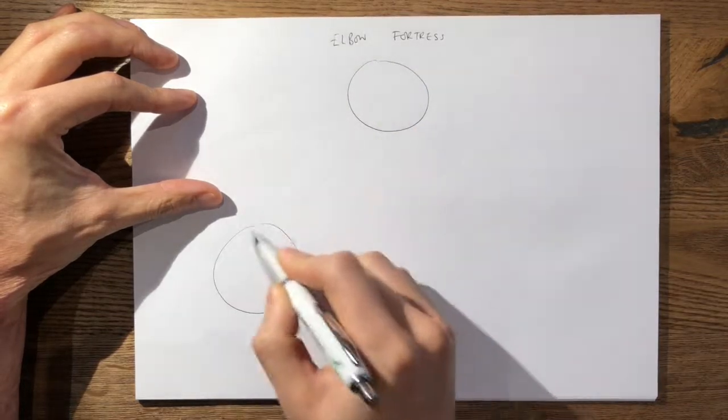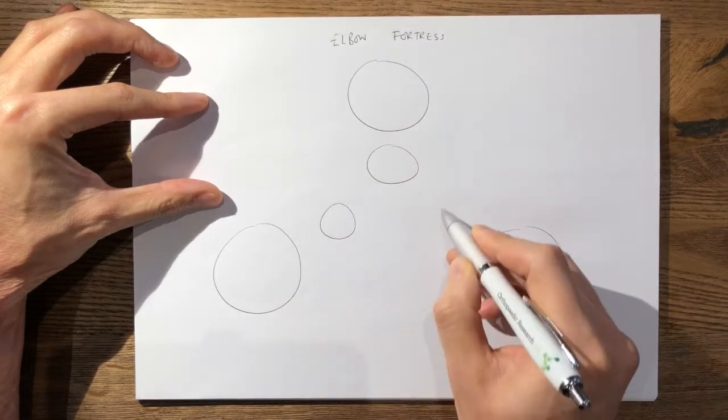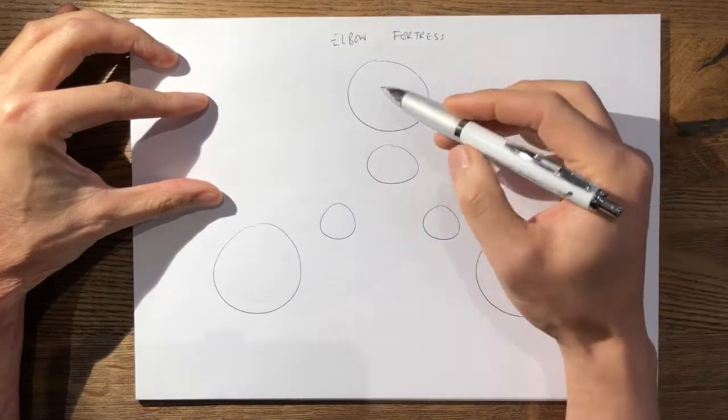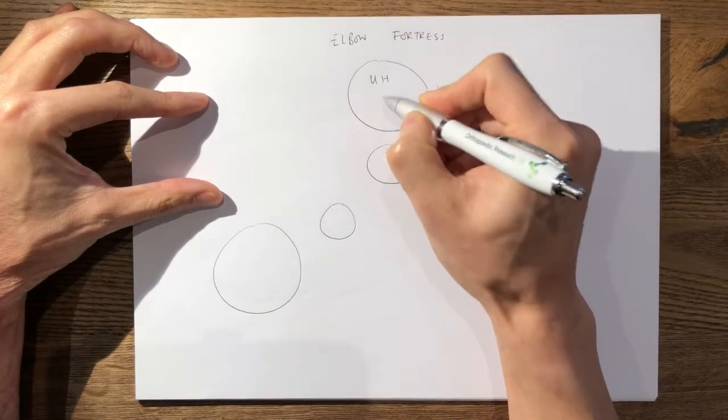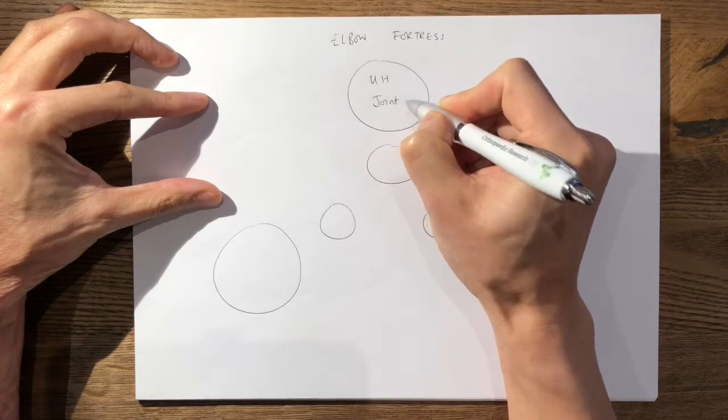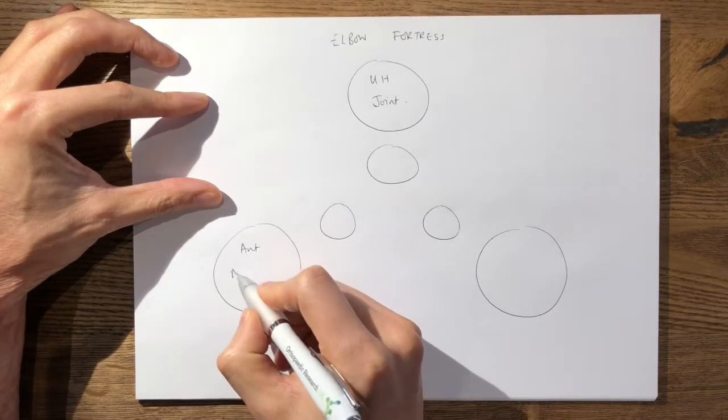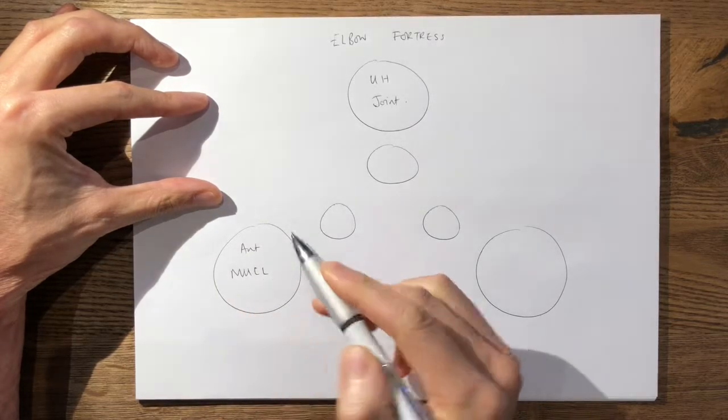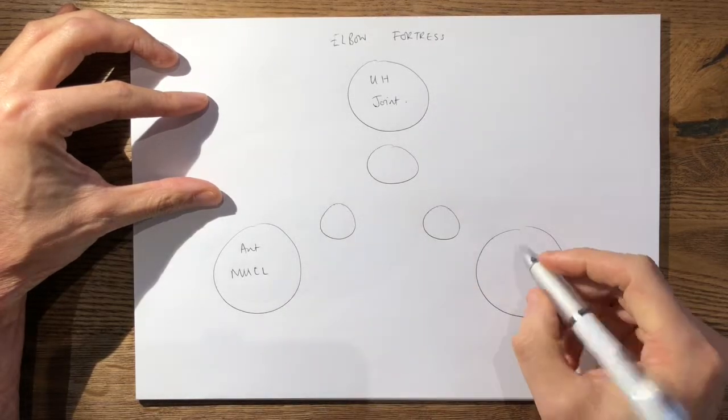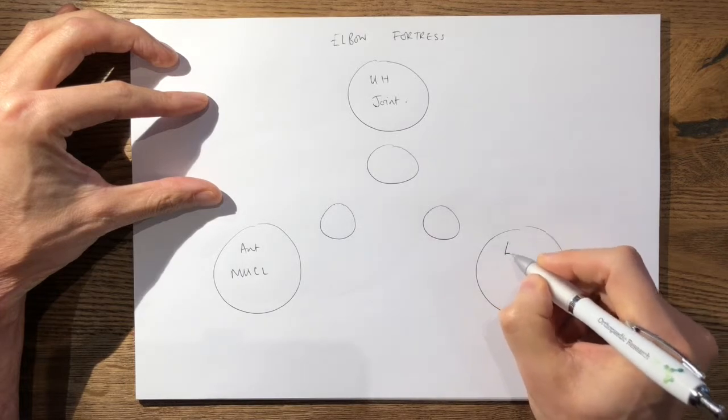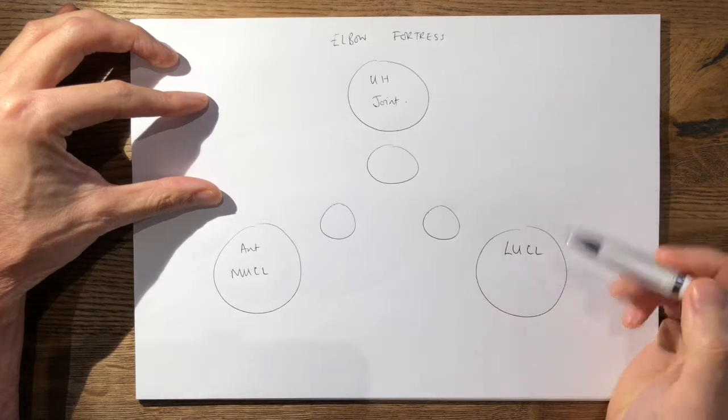Your three primary stabilizers include your ulno-humeral articulation, and down here you have your anterior band of your medial ulnar collateral ligament, which attaches from your medial epicondyle to your sublime tubercle. And over here you have your lateral ulnar collateral ligament, which attaches from your lateral epicondyle to your supinator crest.